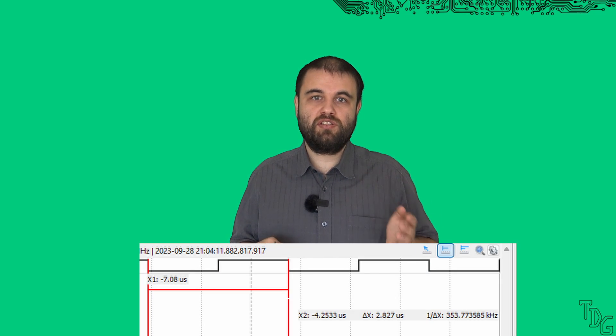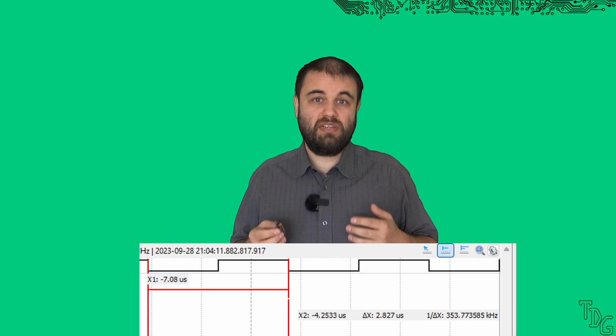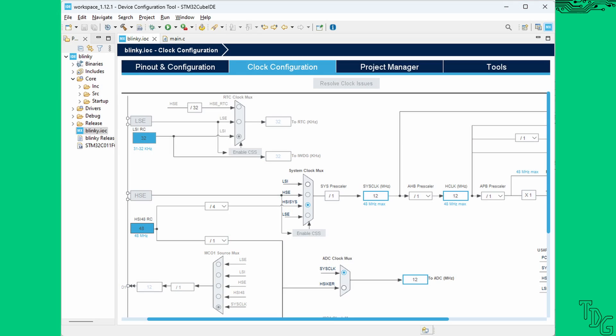The STM32, as I mentioned before, used only 8 to 20 kilobytes of program space to produce about 353 kilohertz signal. But there's a catch, it ran only at 12 megahertz, because I couldn't configure it to 16 megahertz. We have to compensate the measurement, so it would give us 471 kilohertz signal at 16 megahertz CPU clock.